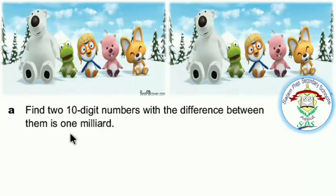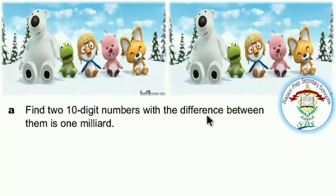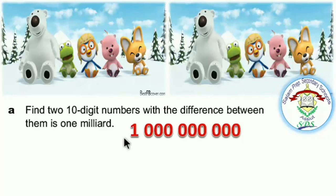Find two 10-digit numbers where the difference between them is 1 million. Difference means minus, a subtraction operation. Two 10-digit numbers. Now, we will write two 10-digit numbers. I can write the first number: 1 million — that is 1 and 9 zeros, all digits, 10 digits.